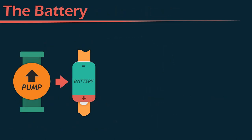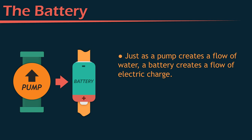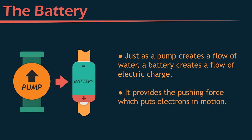The pump of the hydraulic circuit is quite a bit like a battery in an electric circuit, because just as a pump creates a flow of water, a battery creates a flow of electric charge. It provides the pushing force which puts electrons in motion. If you connect a wire between the positive and negative terminals of a battery, and that conducting wire has a ton of free electrons, the battery will cause those electrons to flow away from the negative terminal and into the positive terminal.